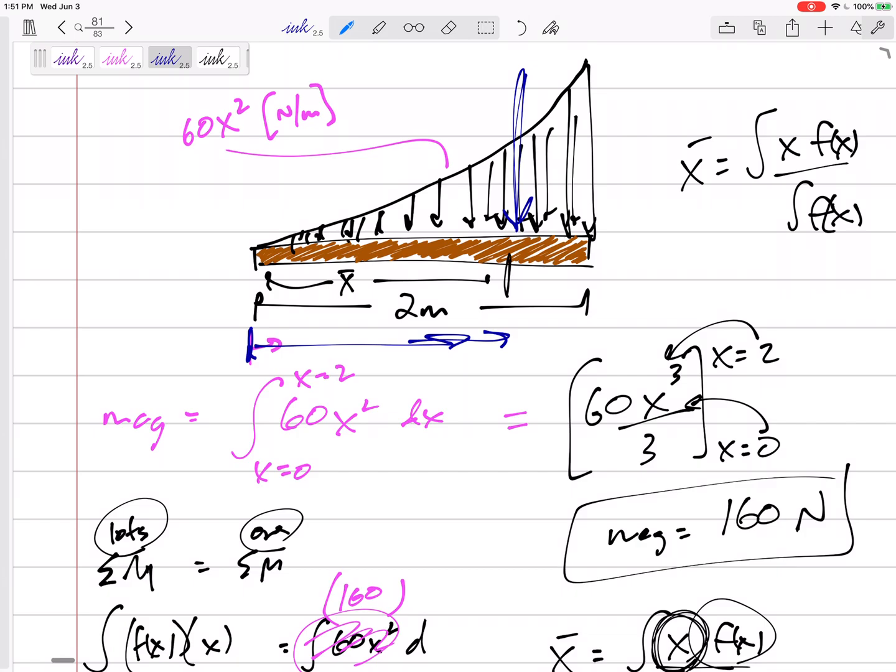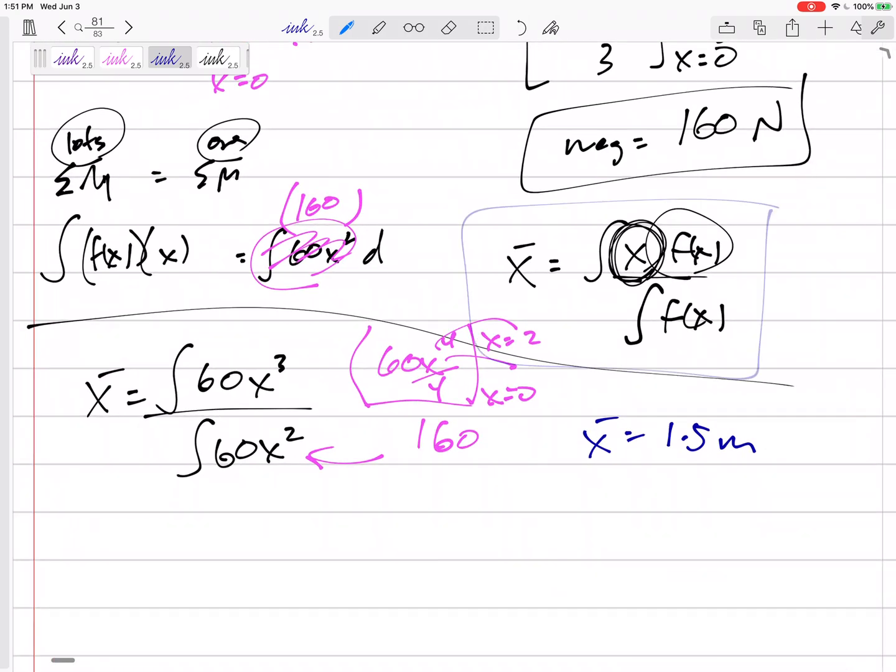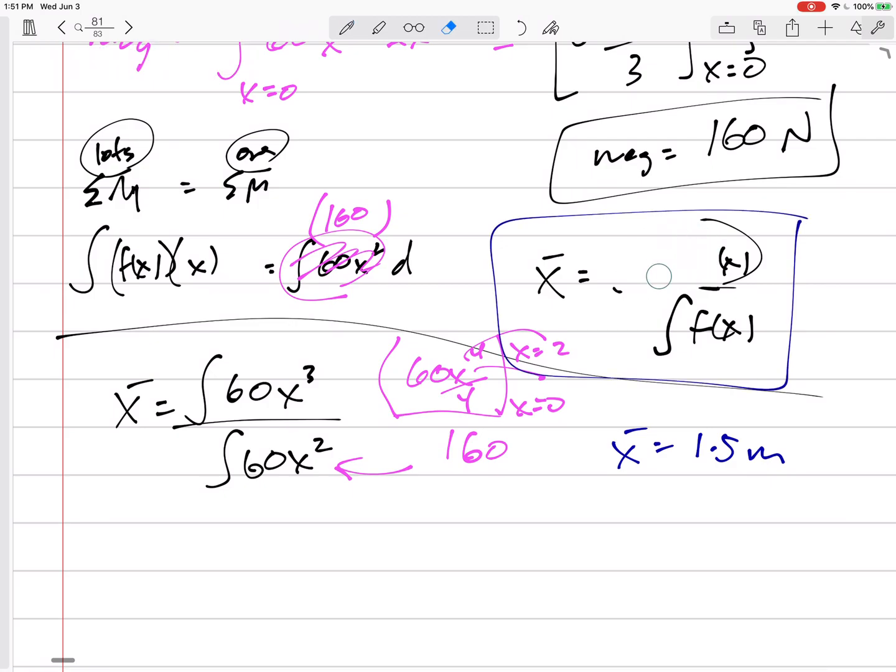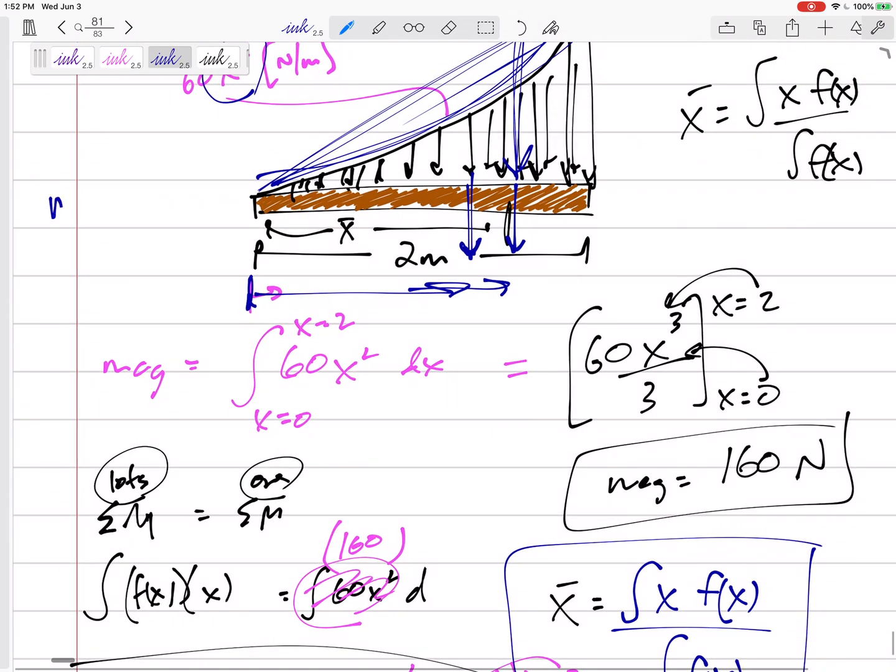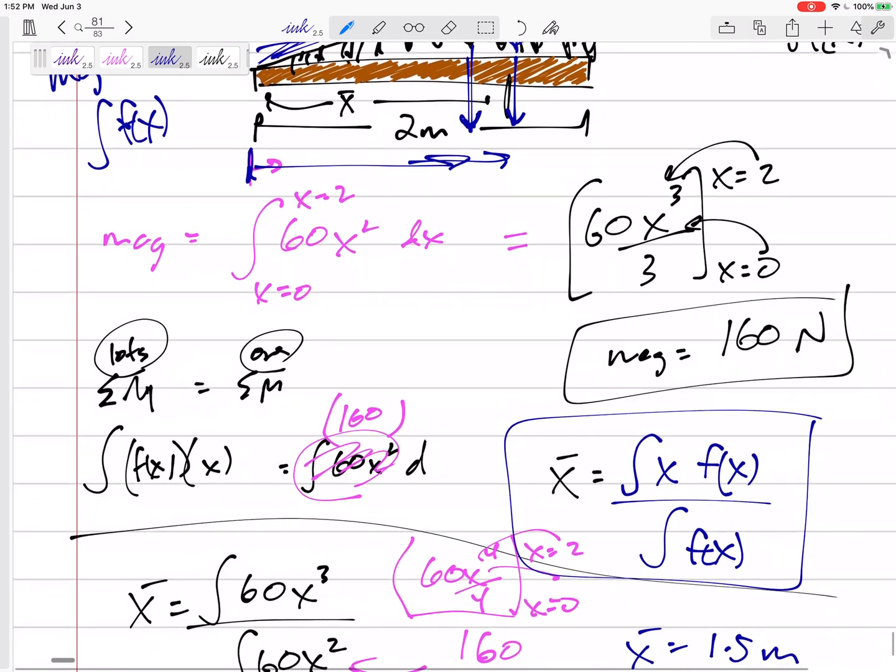Did you notice that a triangular load, we would have put it at two thirds right here, but an x squared, we would put it at three fourths over here. I wouldn't memorize anything like that. That only happens with an x squared. If you go from zero to something, you'd put it at three fourths. But here it is. The location of the x centroid would be the integral of x f of x over integral of f of x. The magnitude is just the integral of f of x, right? The magnitude is just the integral of the function.